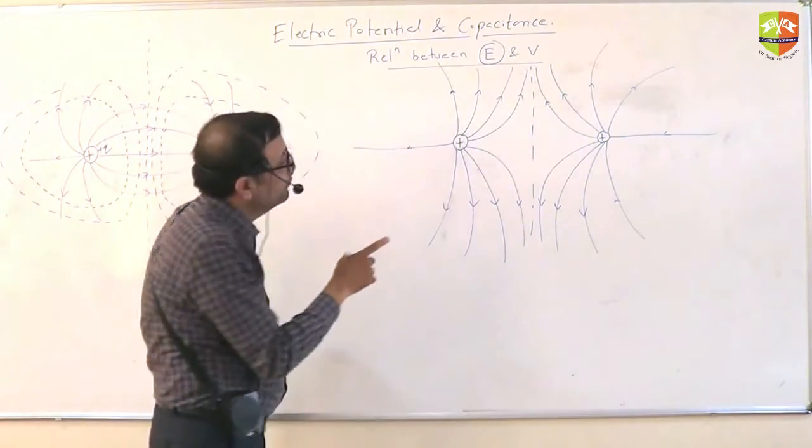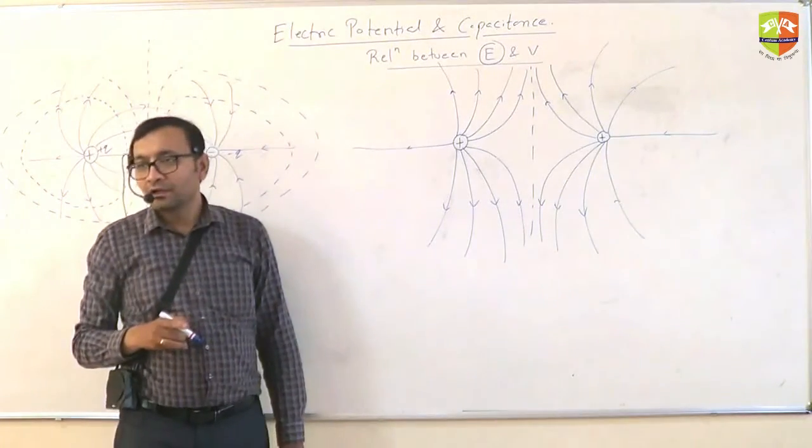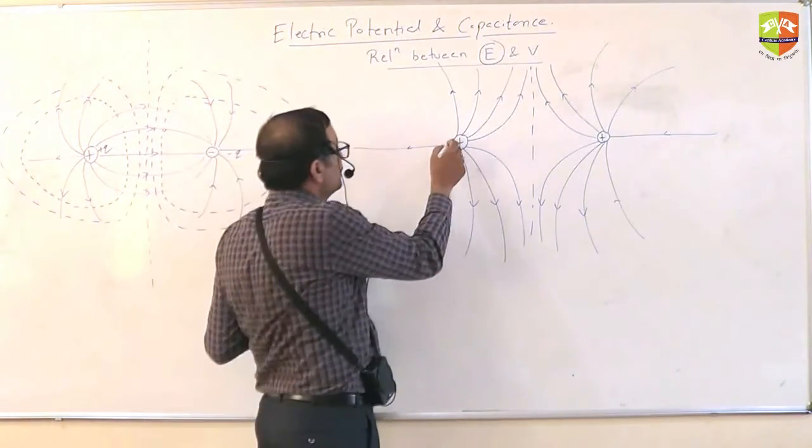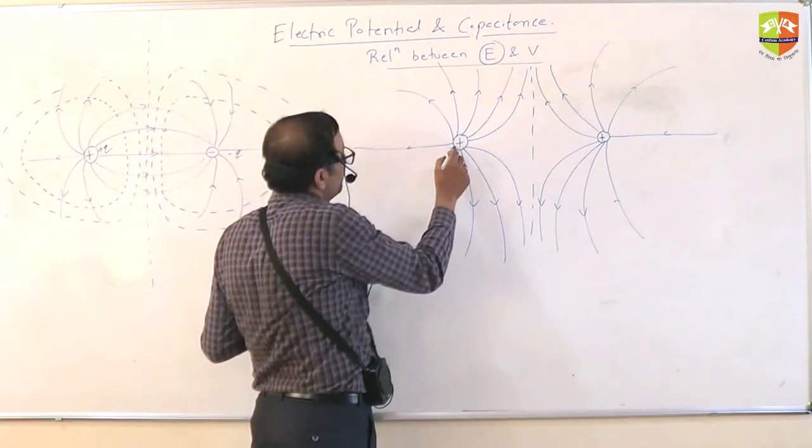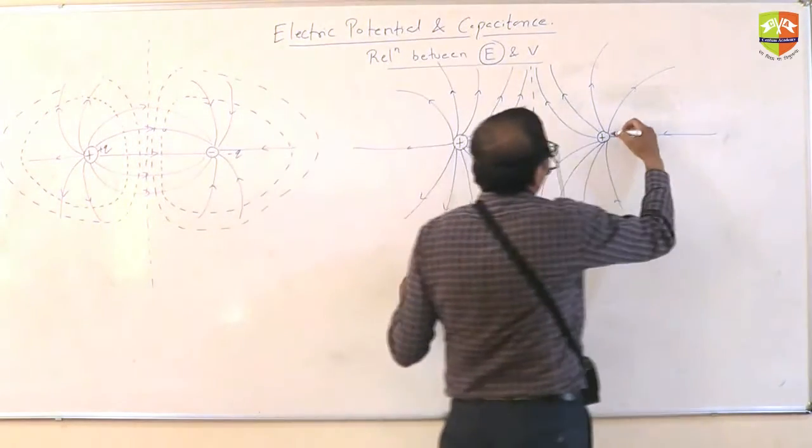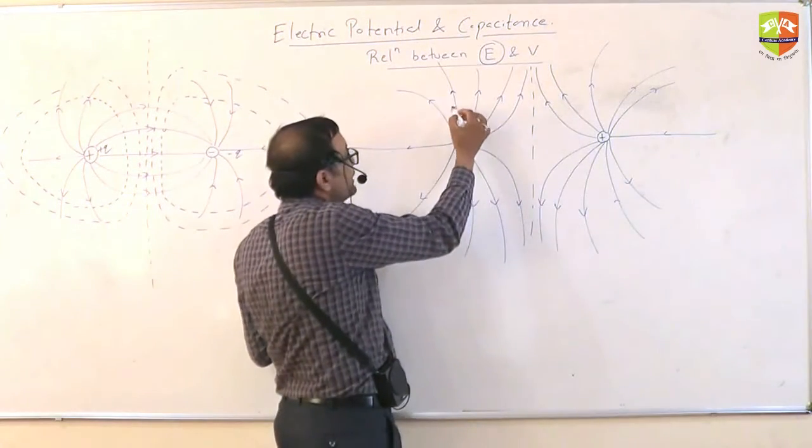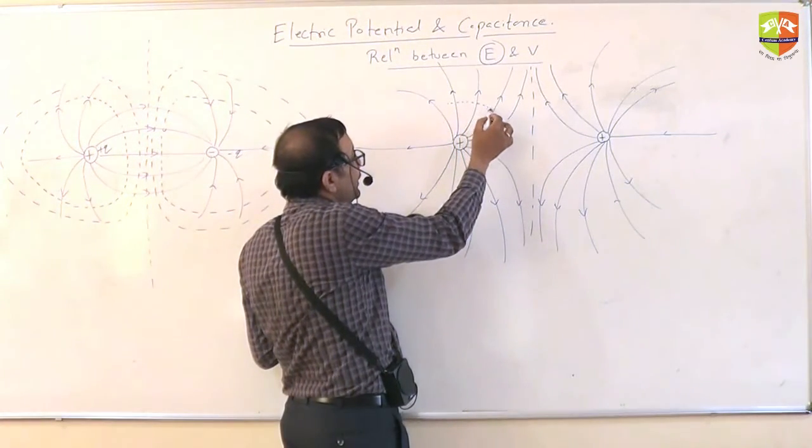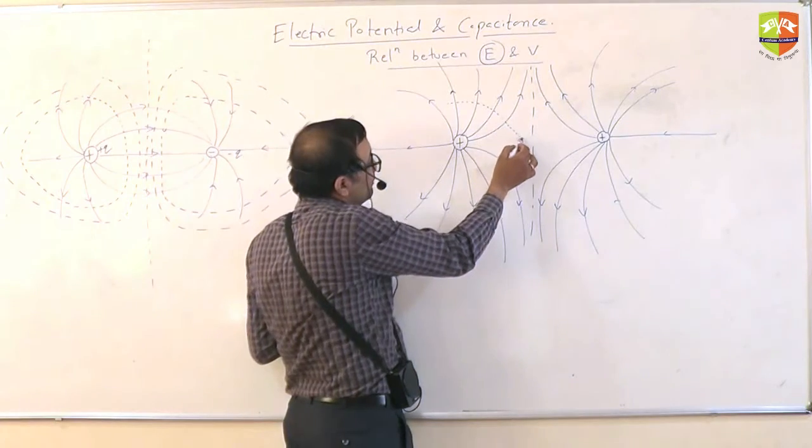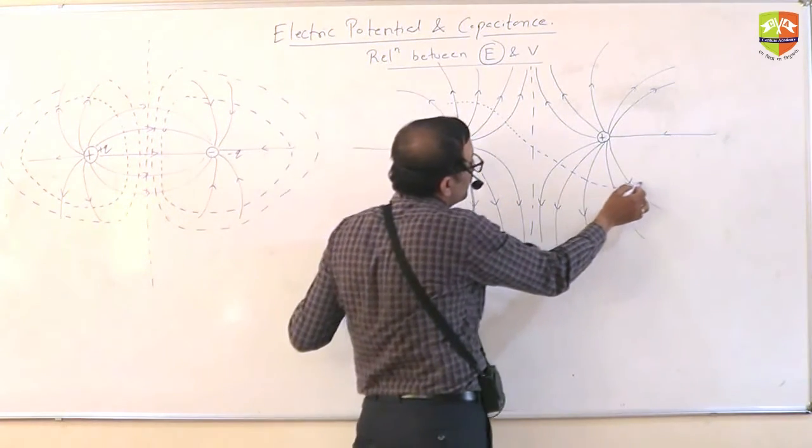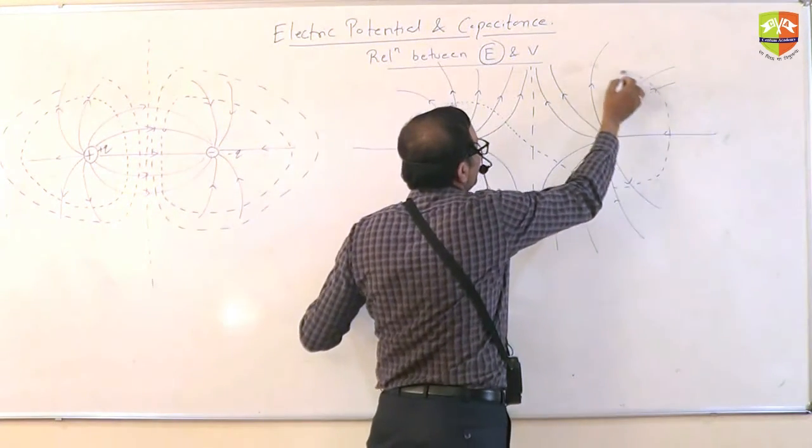This is what the field line will be right. Now as most of you have correctly understood the bulge will be inverse. The nature of field lines are like that, if you draw perpendicular.